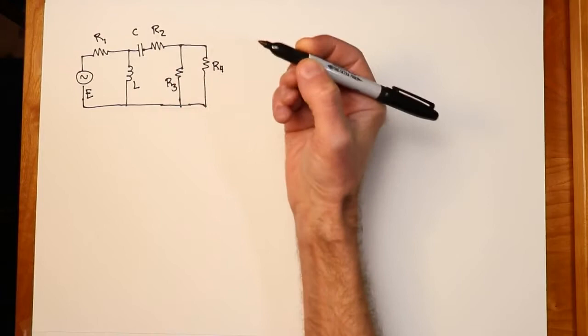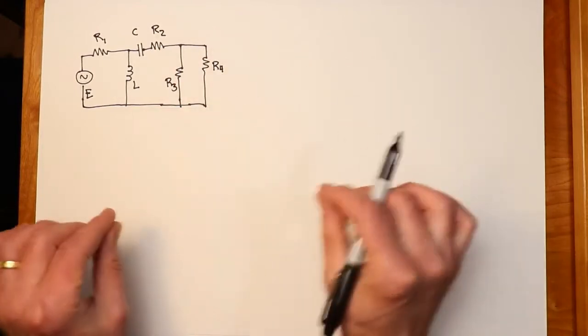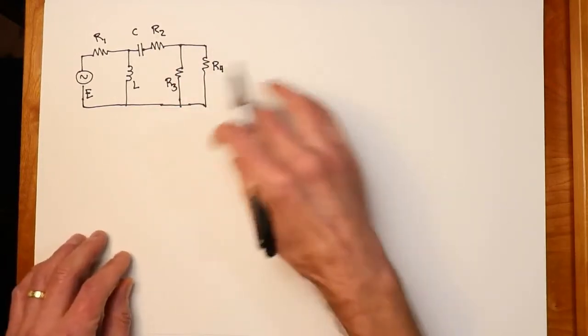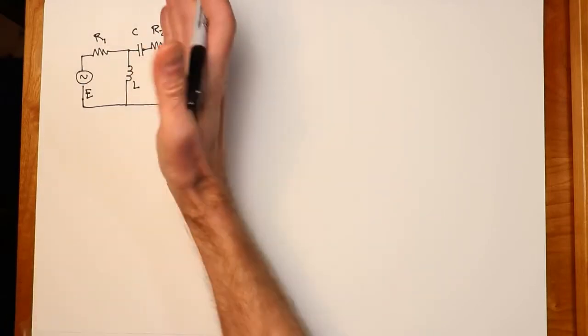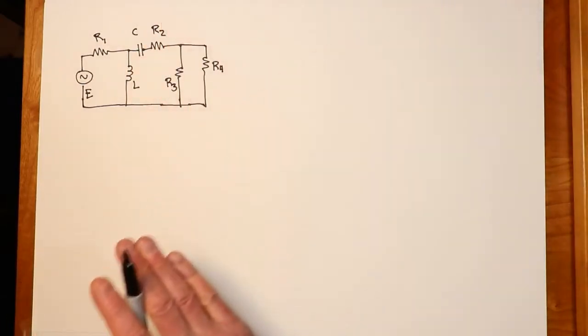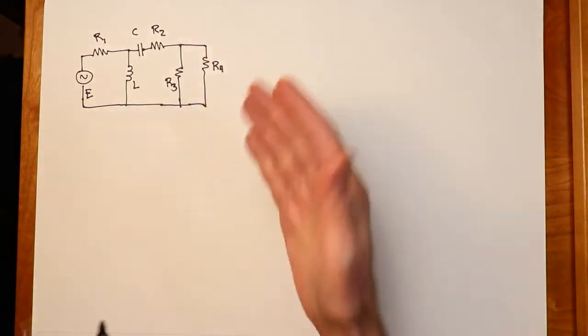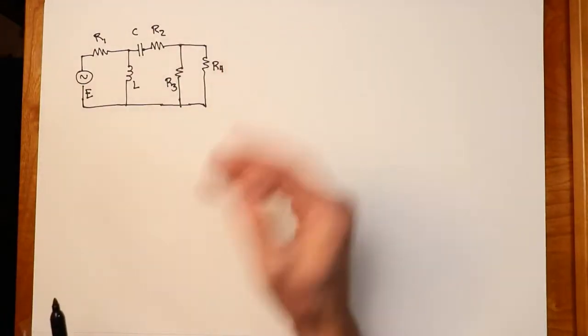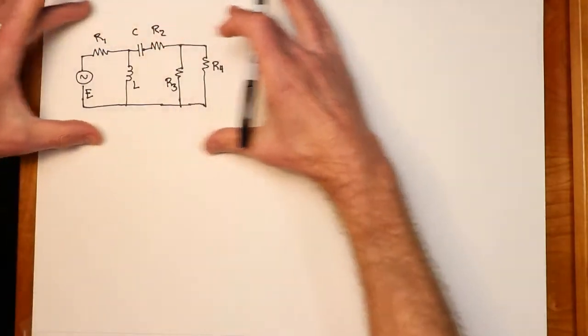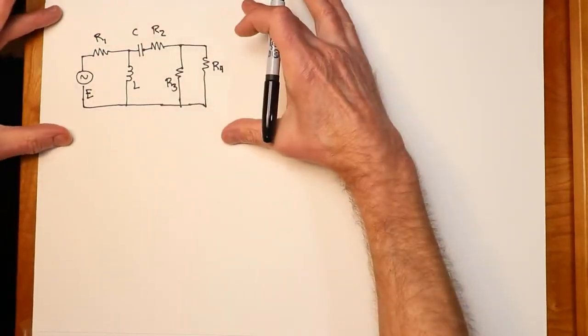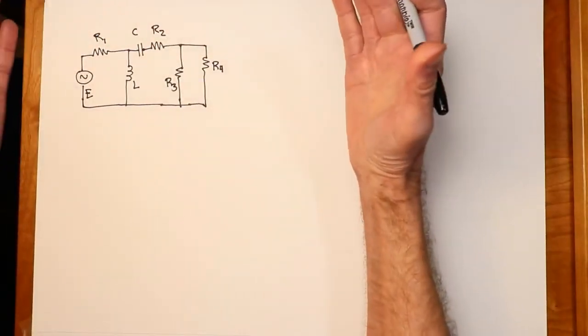Now, it's important to note that there is no such thing as a single Thevenin equivalent circuit for something like this. Where do we cut it? Every time we cut it, every time we come up with a port, two wires, two connections, there's a Thevenin equivalent. So that would be a trick question to say, what is the Thevenin equivalent of this circuit? Well, where do we want to cut it?